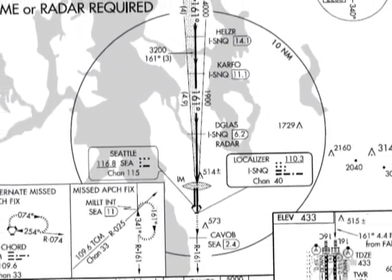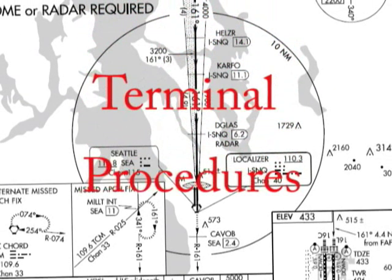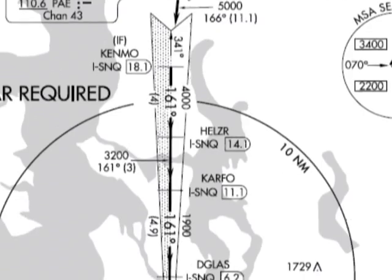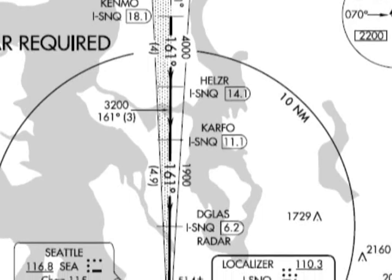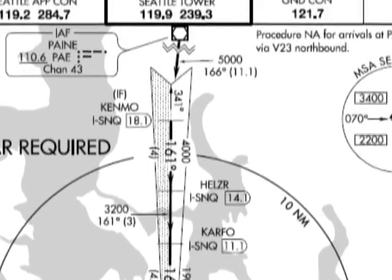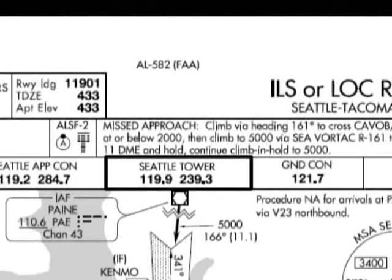An approach plate, or as they are also more officially called, terminal procedures, show the specific procedure that you must follow for a particular type of approach to a given runway. They show altitudes and headings you need to fly, as well as obstacles, terrain, and potentially conflicting airspace. Furthermore, they also list missed approach procedures and commonly used radio frequencies.